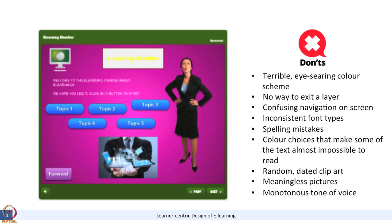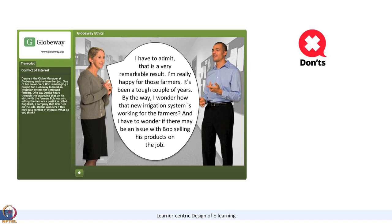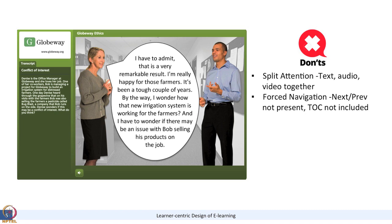Lastly, monotonous voice. When a machine speaks, it will be monotone — one tone continuing throughout a half-hour or one-hour session — and that is not acceptable for a learner to hear. In the next bad example, you can see split attention: there is too much text on screen, audio is playing, the text has inconsistent font sizes on different sides, and everything is playing together so you cannot relate to it. Force navigation again — big no-no. And the background has so many layers — all shades of green. So when designing e-learning, make sure you don't do these things. Talk to your graphic designers, finalize and freeze the color scheme, and don't change it later.